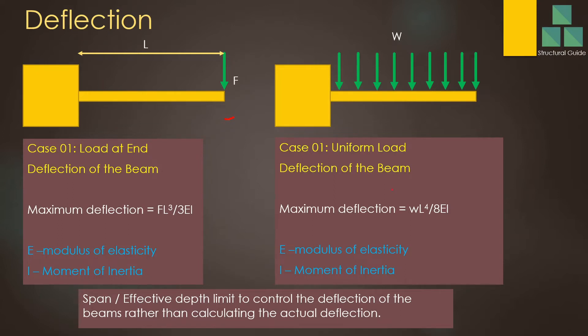Now, let us come to the next example. When you have a uniformly distributed load, how to calculate? Also easily you can calculate when you have uniform load - the maximum deflection equals WL to the power 4 divided by 8EI. Here E is the modulus of elasticity and I is the moment of inertia, and W is the uniformly distributed load or line load, and L is the span.